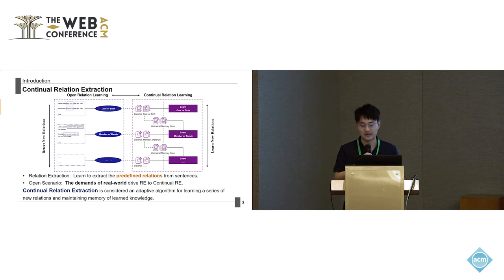At first, we all know that relation extraction involves learning to extract predefined relations from sentences. However, the real world is dynamic, and the requirements from data are evolved. This brings us to a new approach known as Continual Relation Extraction. Continual Relation Extraction is not just about extracting new relations, but also about retaining previously learned information.